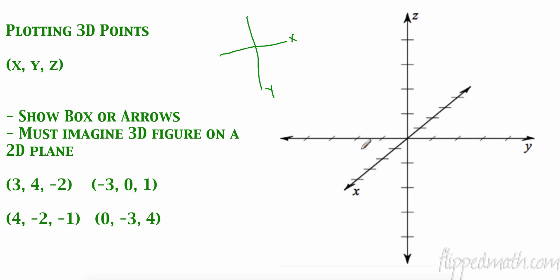Sometimes in another class or later in college you may see the x, y, or z switched around — just play along with whatever coordinate system is given. Most of the time, the z-axis will be on the vertical axis. I'm going to show you two different ways to plot points. The first way is the box method.